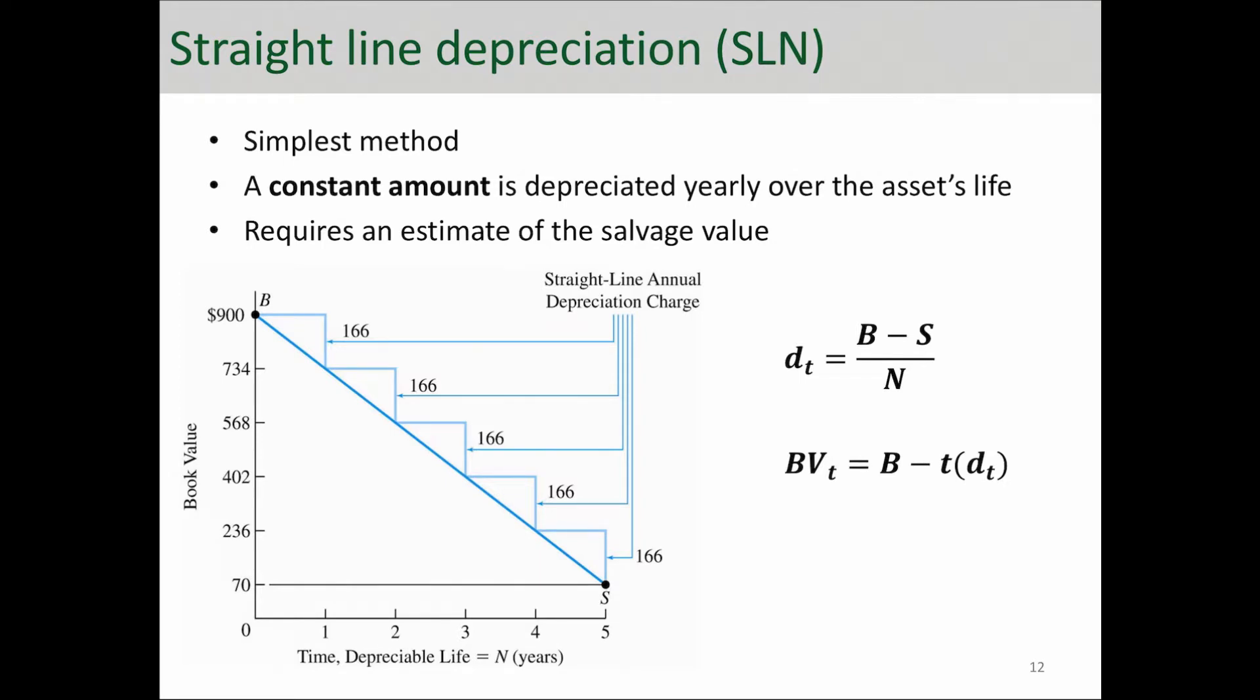In straight line depreciation method, a constant amount is depreciated yearly over the asset's life. In this graph here, you're looking at one example of straight line depreciation where the initial value of the asset, or cost basis, was $900 and the salvage value is $70, and the depreciation was calculated over five years.